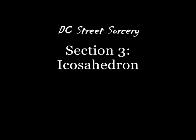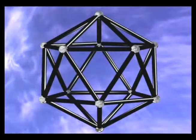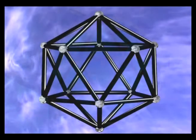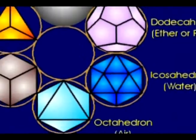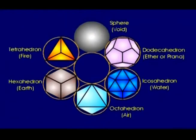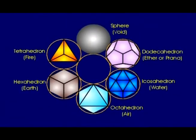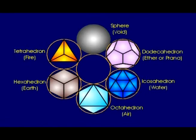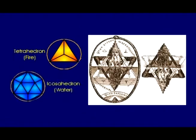Section 3: the icosahedron. This is an icosahedron. The icosahedron is another of the Platonic solids. It represents the element of water, which is an opposite element of the tetrahedron — fire.